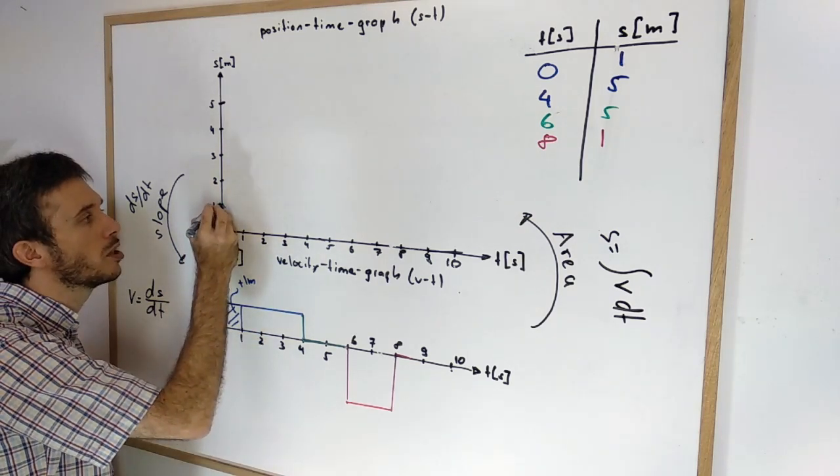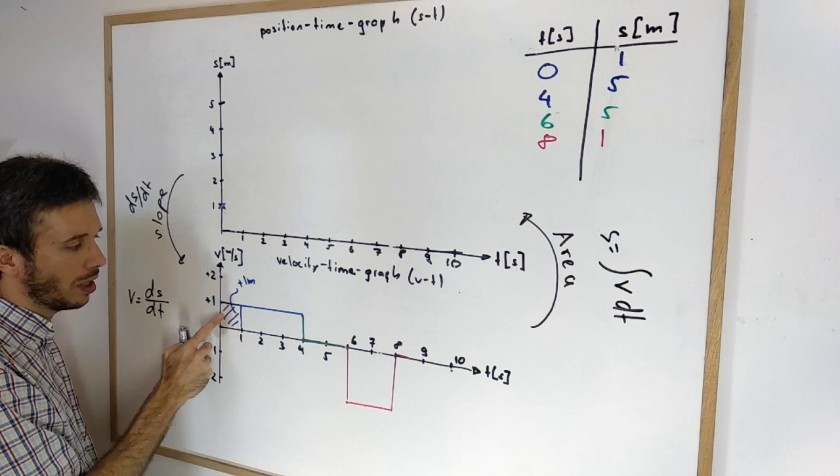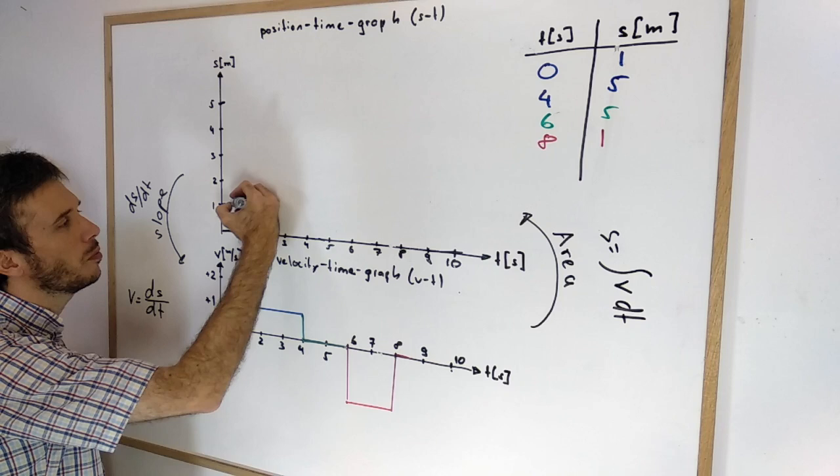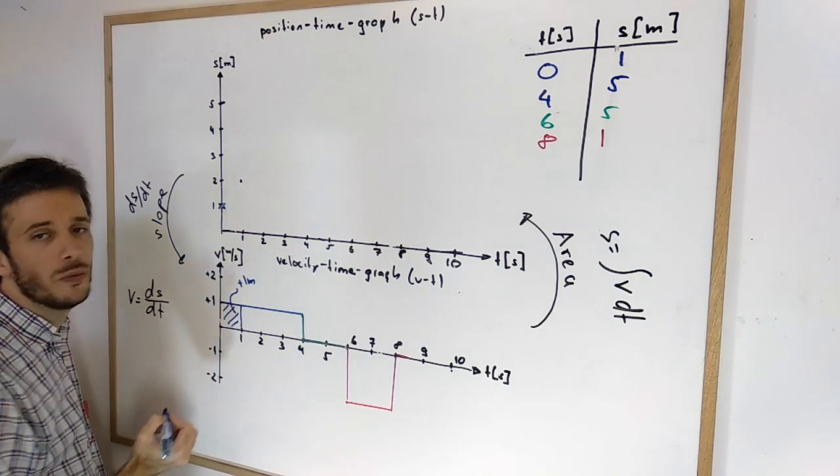So let's assume my initial position was at 1 meter. So that means within 1 second I went plus 1 meter. So at 1 second I was at 2 meters.